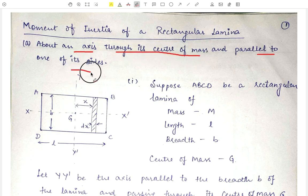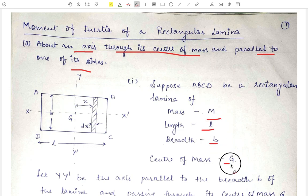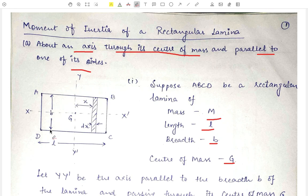Let us consider ABCD to be a rectangular lamina of mass M, length L, and breadth B, with G as its center of mass, as we can see here. Now let us consider YY' to be the axis parallel to the breadth of the lamina and passing through its center of mass, that is G.